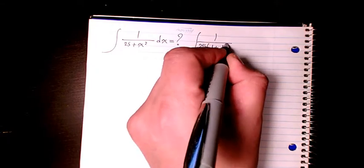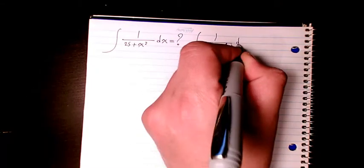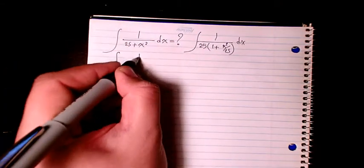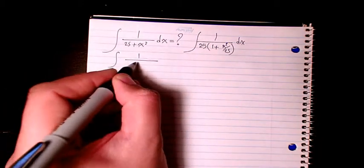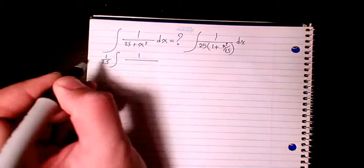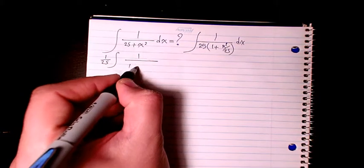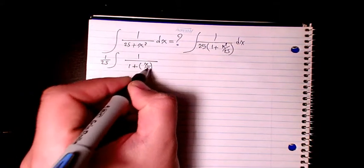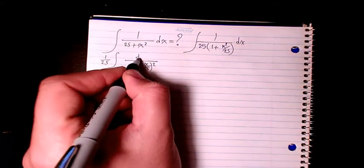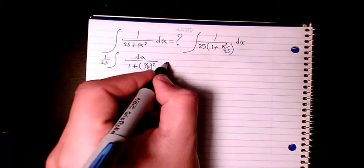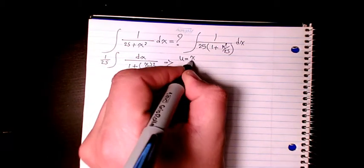Or it will be 1 over—I can put 25 outside—it's going to be 1 plus x divided by 5 squared, and we have dx here. Then I can say u equals x over 5.